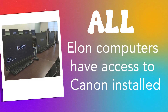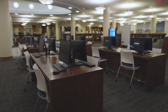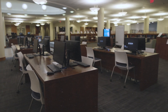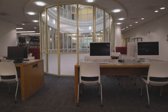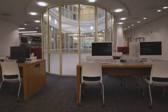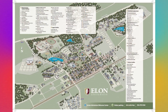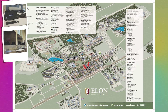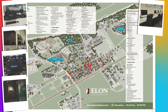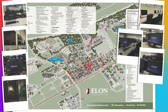However, all Elon computers have access to the Canon printers installed, so if you don't want to download another thing, find yourself a computer. The library is a great place to go with computers on the first and second floors, plus it's open to all students. Many academic buildings also have computers available, including Alamance, Duke, Lindner, McEwen, Mooney, and the KVC.